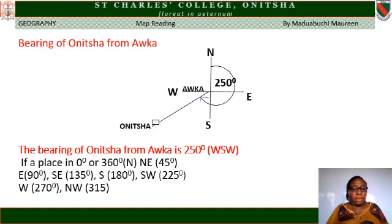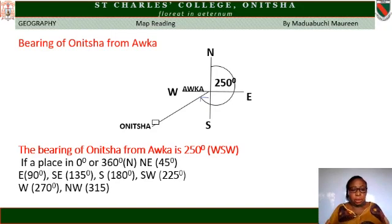For reference: North is 0 degrees, Northeast is 45 degrees, East is 90 degrees, Southeast is 135 degrees, South is 180 degrees, Southwest is 225 degrees, West is 270 degrees, and Northwest is 315 degrees.